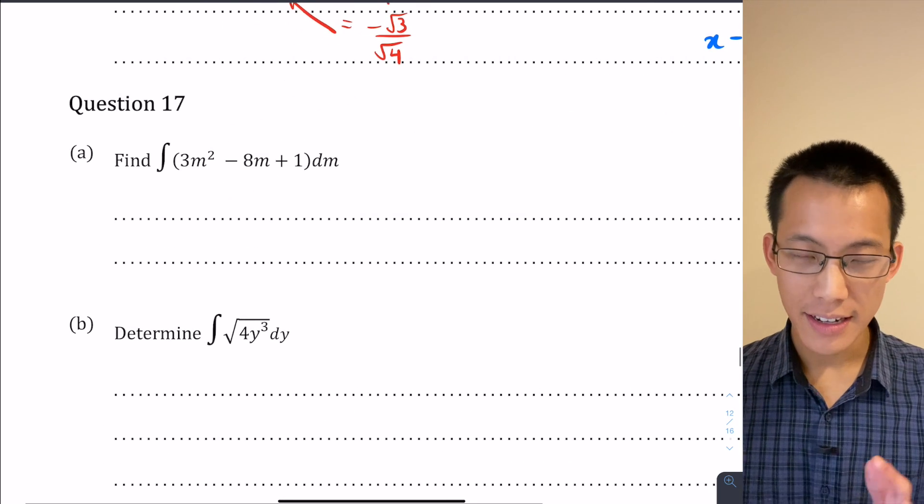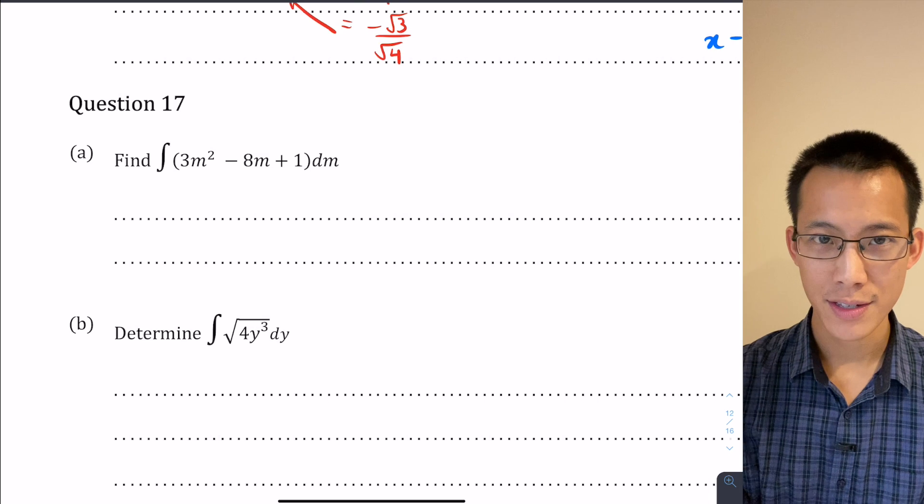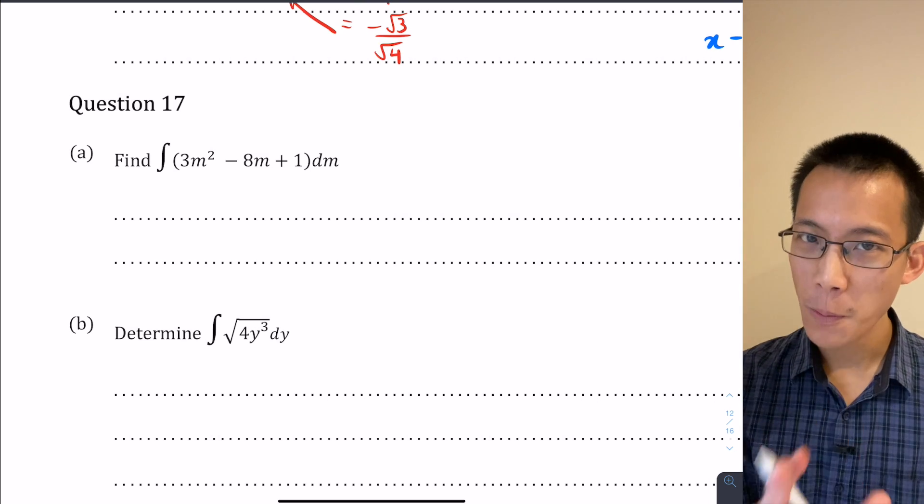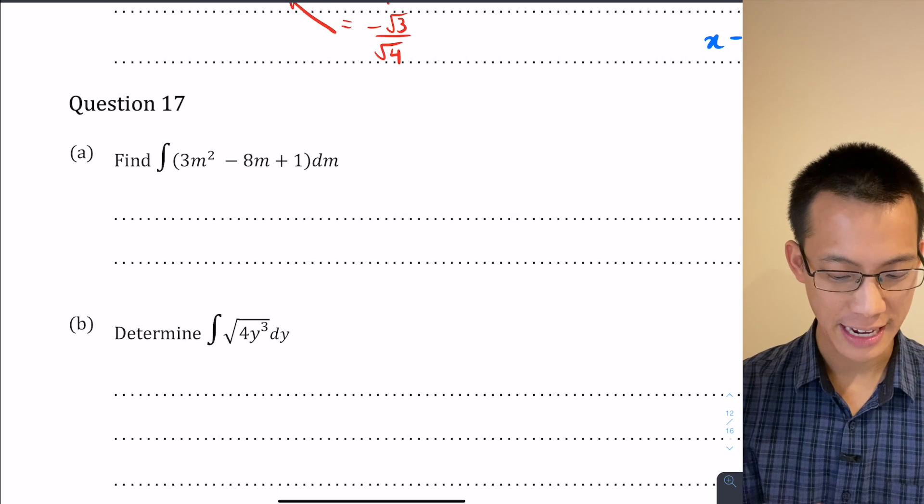Question 17 starts out with part a, find this integral. Now you'll notice, and most people were okay with this from the outset, that there's m's instead of x's. Most people were okay with this with one little issue and I'll show you what that is in a second.